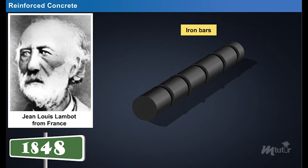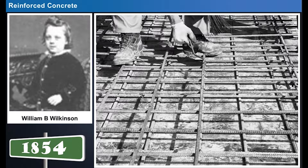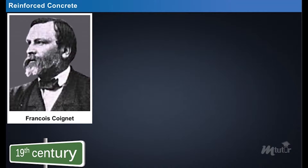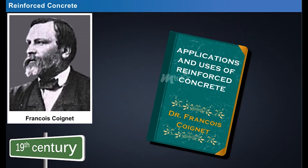Later, in 1854, William B. Wilkinson used iron bars to reinforce the concrete floors of a two-story cottage. François Coinet was a 19th century French industrialist. He was the first person to use reinforced concrete in large-scale construction, and he also published a book describing the applications and uses of reinforced concrete.